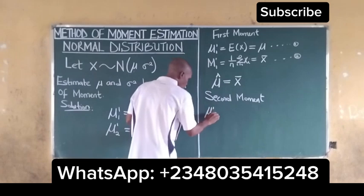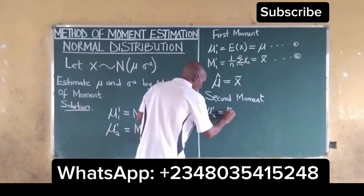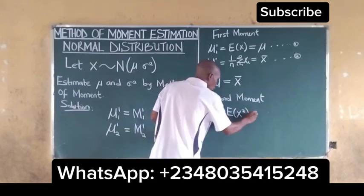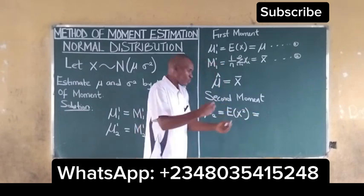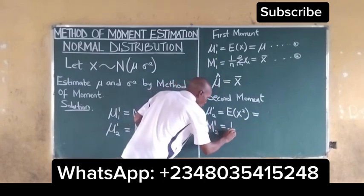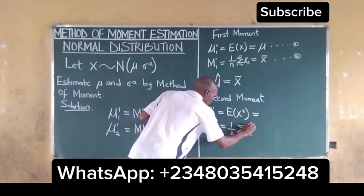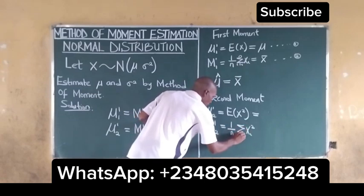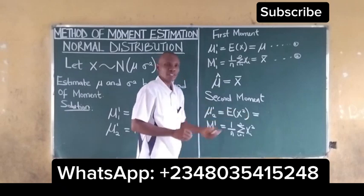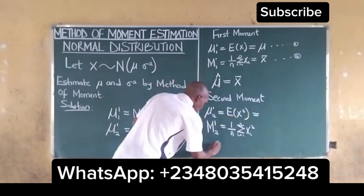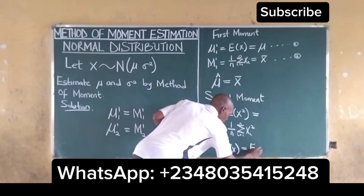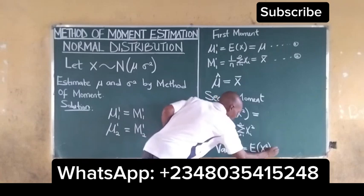For the second moment, we have mu_1_2 equal to the expected value of X squared. For the sample mean we have (1/n) summation of x_i squared, from i = 1 to n. We know the sample version but we need to find the population version E[X²]. We obtain this by using the variance formula: Var(X) = E[X²] minus (E[X])².